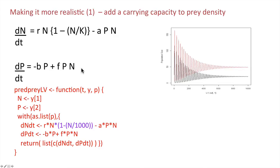Now, this is what we would get when we actually plot it out. Here, instead of the familiar cycles what we're actually getting is movement towards an equilibrium, it's damped oscillations towards an equilibrium of predator and prey.